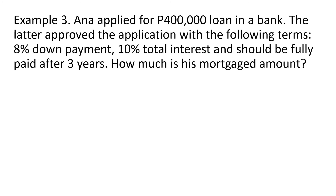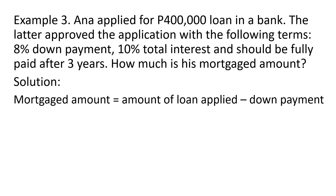Example 3: Ana applied for a P400,000 peso loan in a bank. The bank approved the application with the following terms: 8% down payment, 10% total interest, and the loan should be fully paid after 3 years. How much is her mortgage amount? The mortgage amount is equivalent to the difference between the amount of loan applied and the down payment.